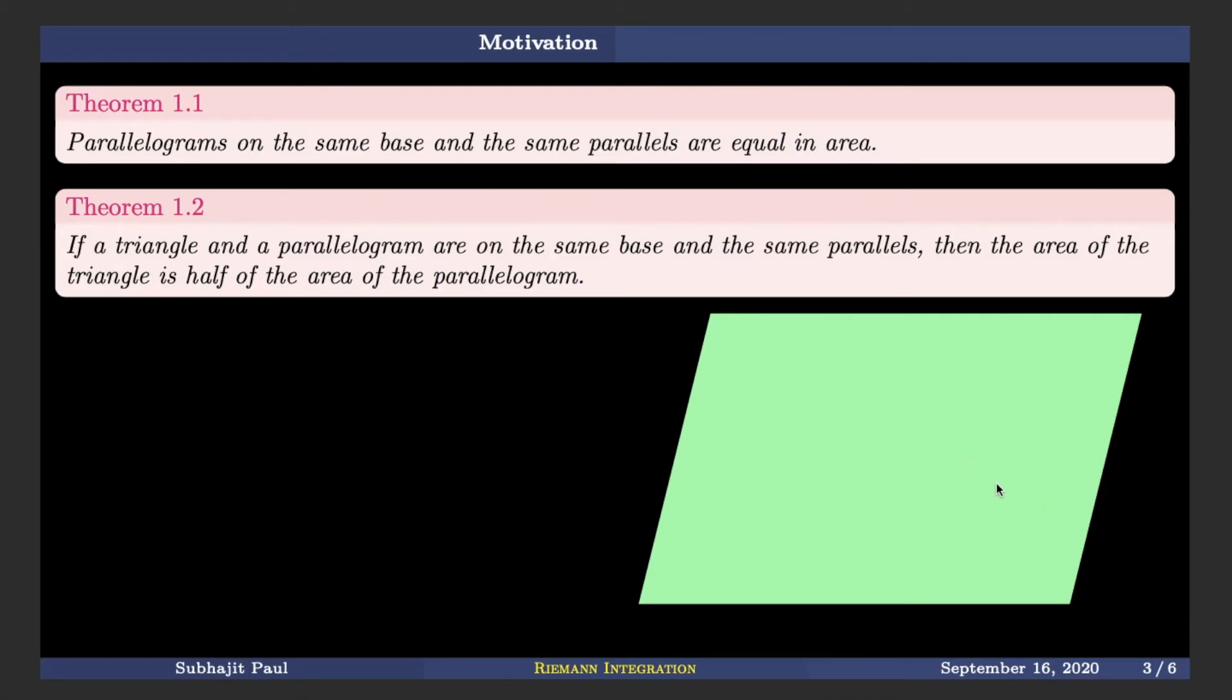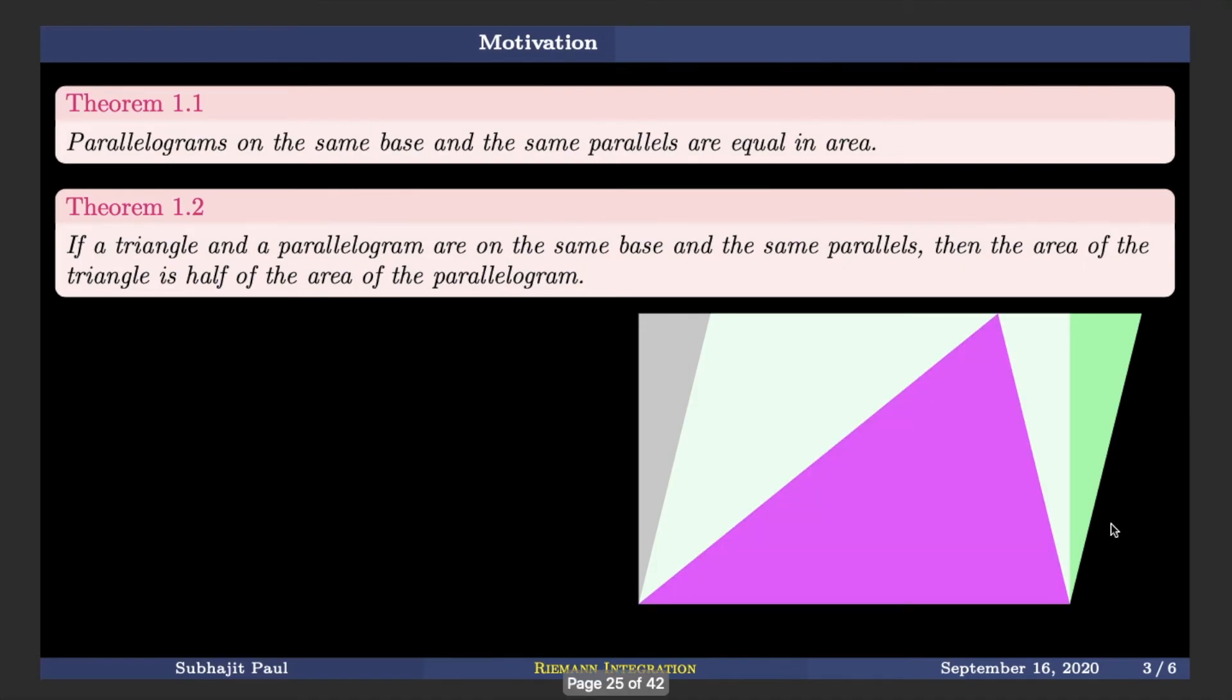So suppose we have this starting parallelogram. The area of this parallelogram will be equal to this rectangle because by theorem 1, this rectangle has same base and is lying between the same parallels as both the rectangle and this parallelogram. Now, if we have this triangle with the same base as the first parallelogram and in the same parallels, then the area of this triangle will be half of this green parallelogram and since the area of the green parallelogram is same as the area of the rectangle, the area of the triangle will be half of the area of the rectangle.